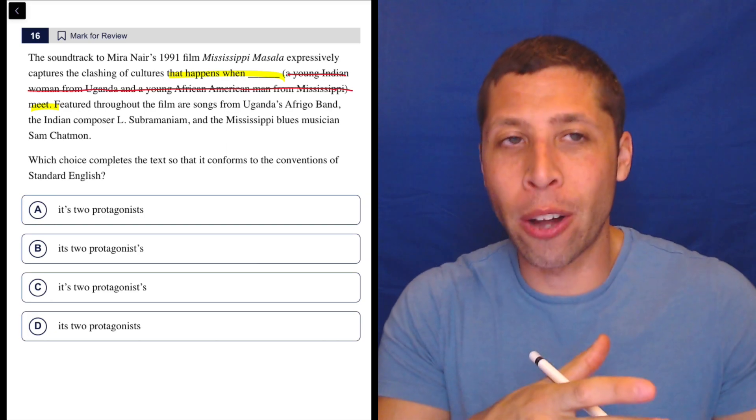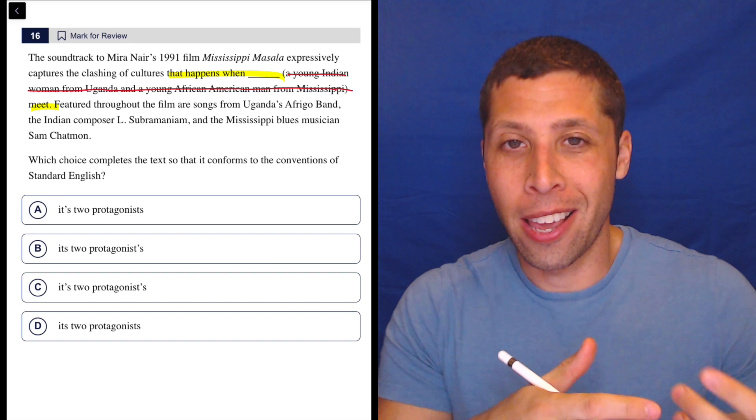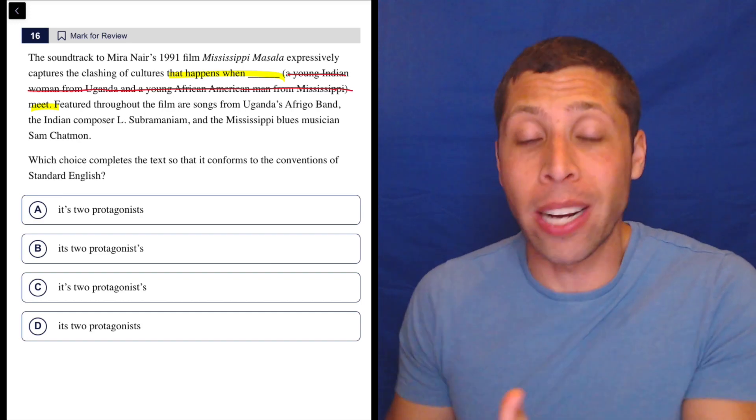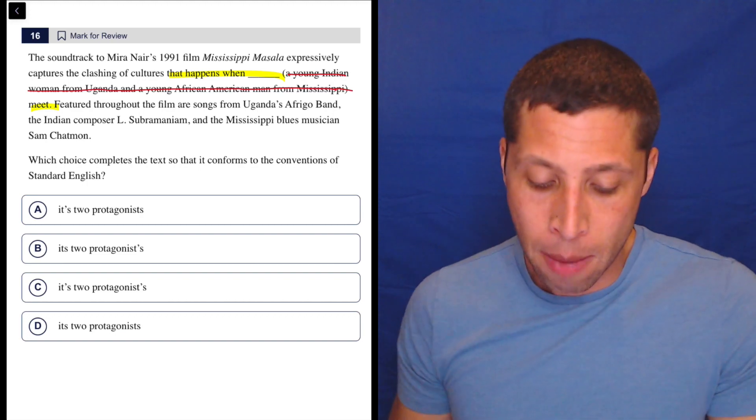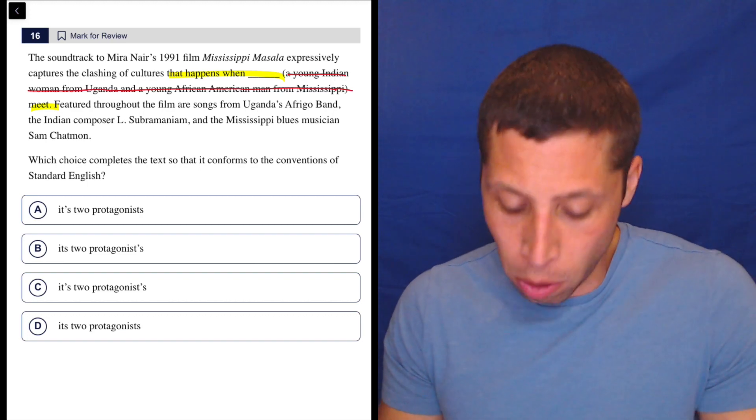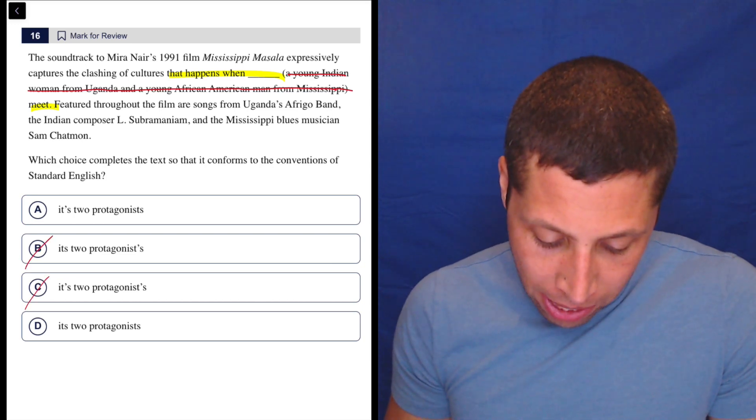So how could we follow this noun and use an apostrophe if the whole point of an apostrophe is it shows ownership of something? It needs to be a thing, right? It needs to be a noun in some way. But meet is a verb. They're meeting. So there's no apostrophe necessary. So that gets rid of B and C.